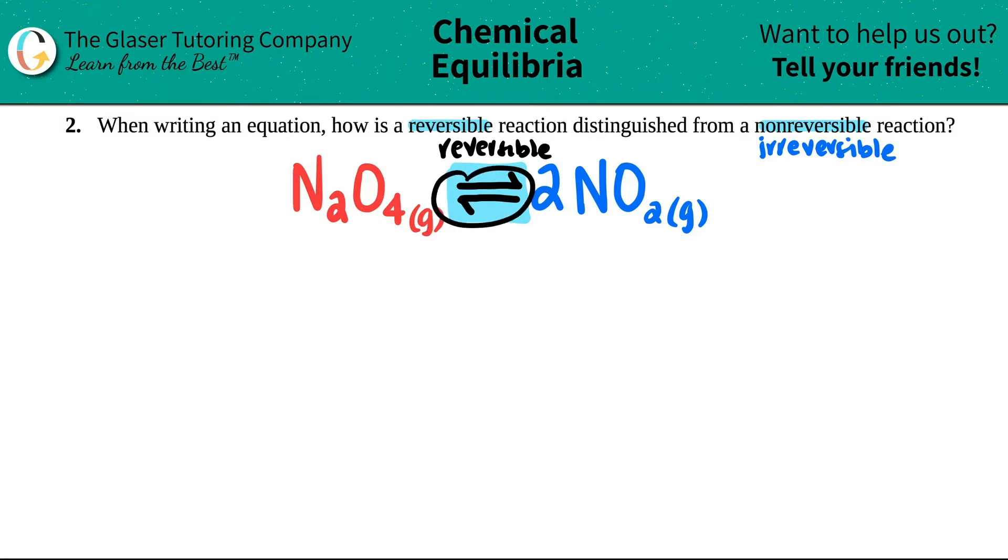So this is the distinguished factor. If I just had this, N2O4, and then I just put a single arrow, and then I said 2NO2, guess what?